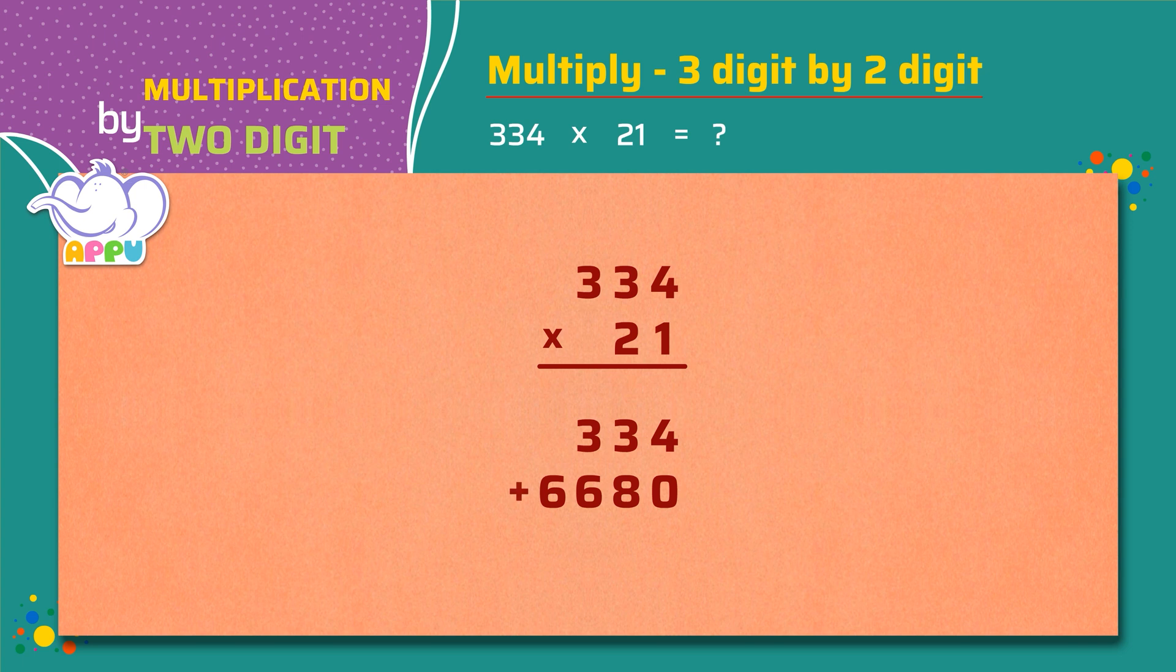Lastly, we add the numbers. 4 plus 0 equals 4. 3 plus 8 equals 11. We keep 1 and carry 1.